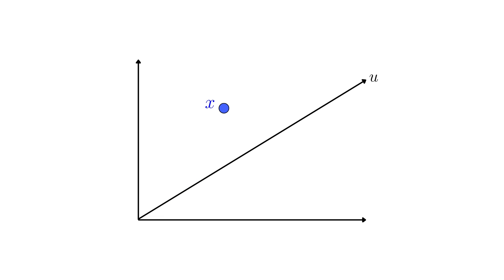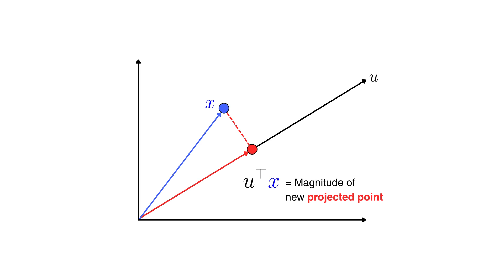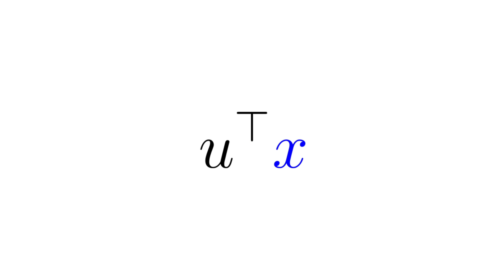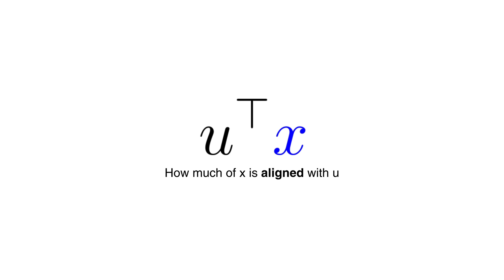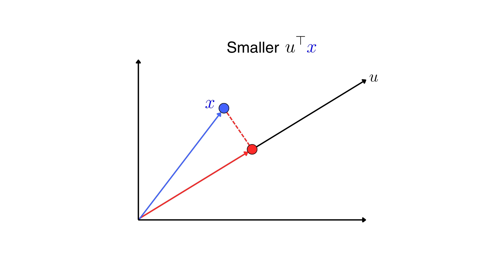PCA finds a new axis or direction, which is a unit vector u, such that when we project the points x onto this axis the spread or variance of the projected values is maximized. To project a point x onto u, our principal component, you drop a perpendicular line from x onto the line defined by u. Calculating the dot product between x and u gives you the magnitude of the new projected point — how far along the direction of u the point lies. This scalar tells us how much of x is aligned with u: the more aligned x is with u, the larger the dot product.